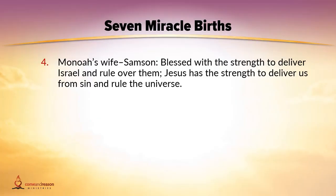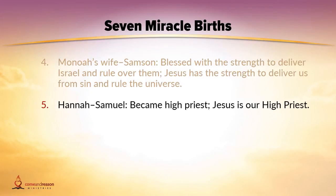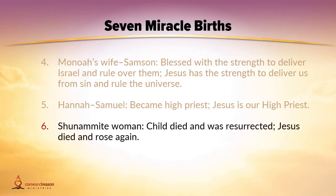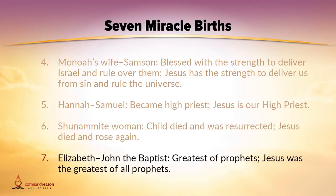Rachel had Joseph - sold into slavery but became a ruler to save his people. Jesus did not think equality with God was something to be grasped but came down to the form of a slave, yet was exalted to be ruler of the universe. Manoah's wife gave birth to Samson, blessed with incredible strength to deliver Israel as judge - Jesus is blessed with incredible strength to overcome sin and rule as righteous judge. Hannah has Samuel the high priest - Jesus is our heavenly high priest. The Shunammite woman has a child who dies but was resurrected - Jesus died and was resurrected. Elizabeth had John the Baptist, the greatest of all prophets - Jesus of course was the greatest spokesperson for God.